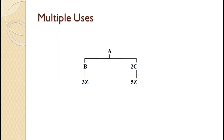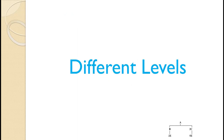We now need to consider two nuances in developing MRP plans. The first nuance is when the same component is used in more than one place — for example, it takes three Zs to make each B and five Zs to make each C. The solution is simple: the gross requirements for Z are just three times the planned order releases for B, plus five times the planned order releases for C. You compute the planning grid for each item that uses Z, then add their planned order releases times the appropriate quantities to get the gross requirements for Z. This works regardless of which level the component appears at.